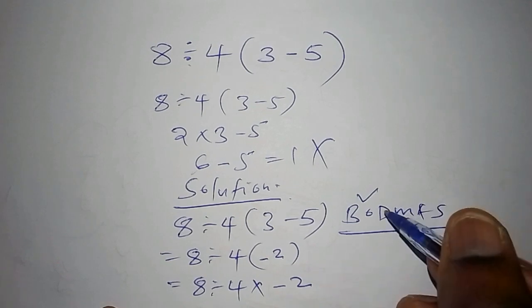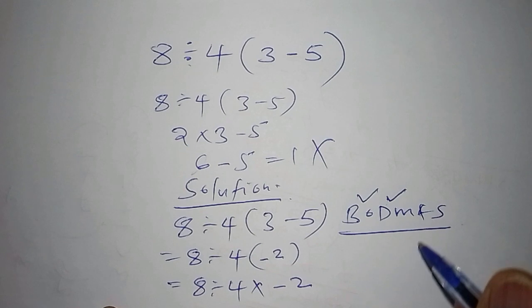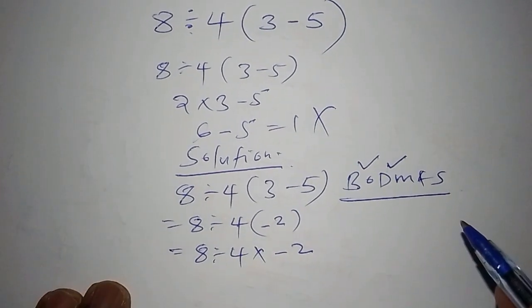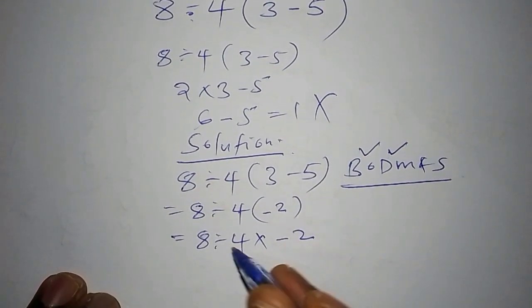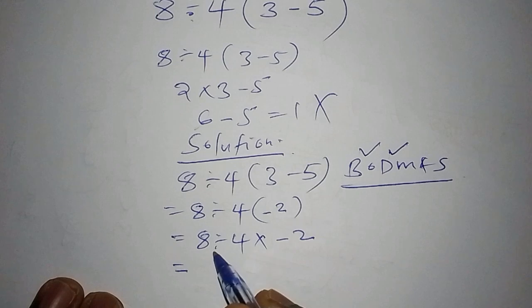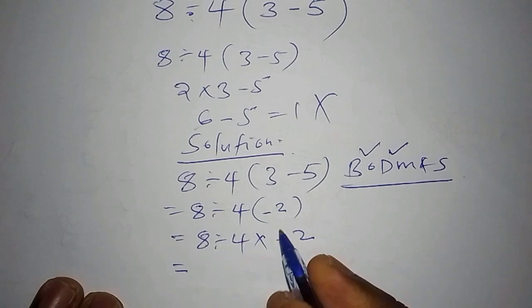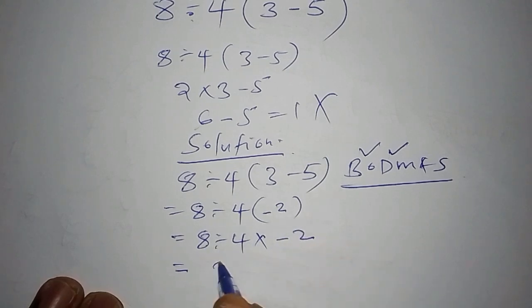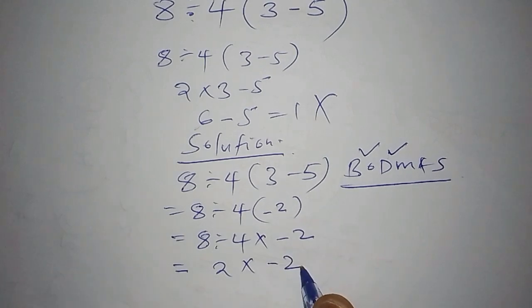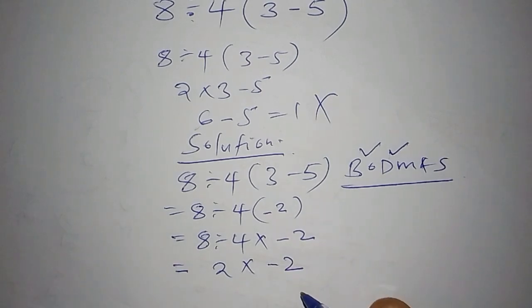As you can see, we are done with the bracket. Next we move to the division sign, that is D. We follow that order. So this equals 8 divide by 4, and 8 divide by 4 is 2 multiply by minus 2. You have to follow the operations, otherwise you will end up with the wrong answer.